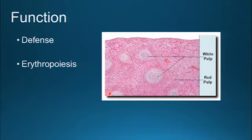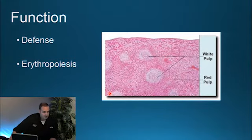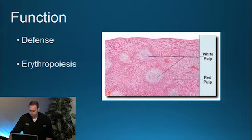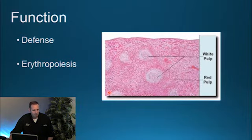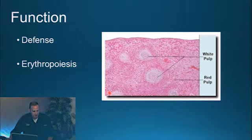Two of the main functions for the spleen are defense and erythropoiesis. Defense begins within the white pulp of the spleen — that's where the lymphocytes develop. Some of its protection wanes in adulthood, but this is critical because this is where the lymphocytes are produced and it protects children against infection.